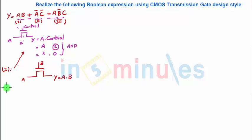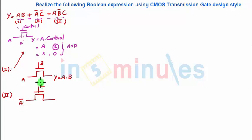Term 2 is similarly straightforward, assuming we have inverted inputs Ā and C̄ available. Draw an NMOS with C̄ as control and Ā as input, giving Y = Ā·C̄. If C̄ = 1, Y = Ā. This again achieves an AND functionality very straightforwardly.